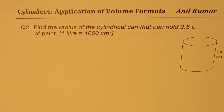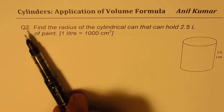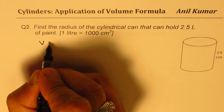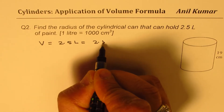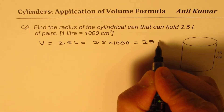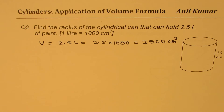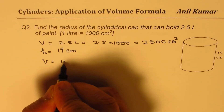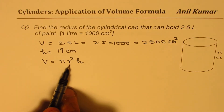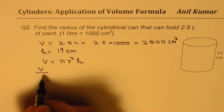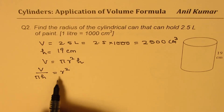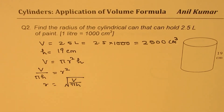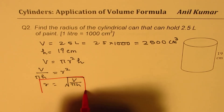Now let's do question number two. Find the radius of the cylindrical can that can hold 2.5 liters of paint. One liter is 1,000 cc, so volume is 2.5 times 1,000 cc, or 2,500 centimeter cubed. We also know height is 19 centimeters. The volume formula is pi r squared h. We need to isolate r, so we divide by pi and h to get radius squared equals volume divided by pi times height. Radius will be equal to the square root of volume divided by pi h.